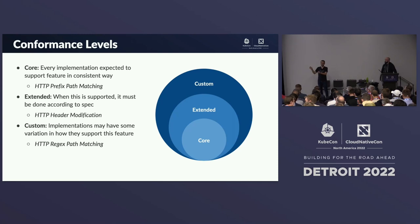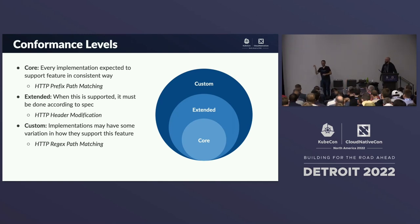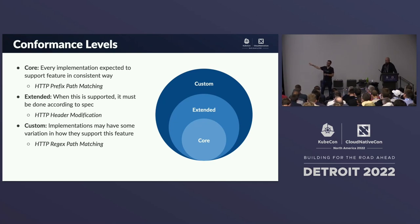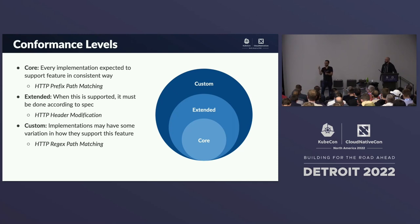Finally, we have a Custom category. A good example is regular expressions. Anyone who's dealt with regex knows there's variation depending on the underlying implementation — whether you're talking to nginx's version of regular expressions, Envoy, HAProxy, or whatever cloud you're using. Custom means we understand this concept but it may not be completely portable across implementations, so you have to understand what is actually implementing that.